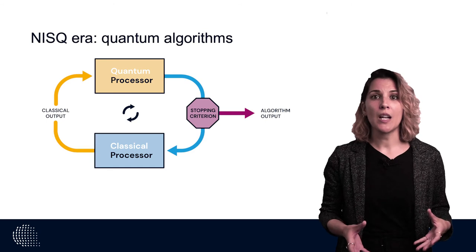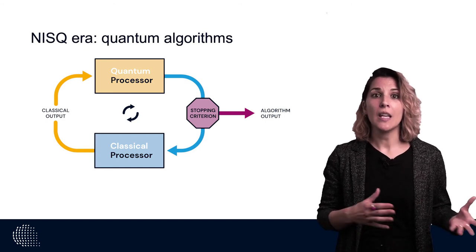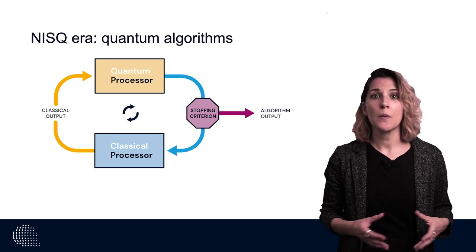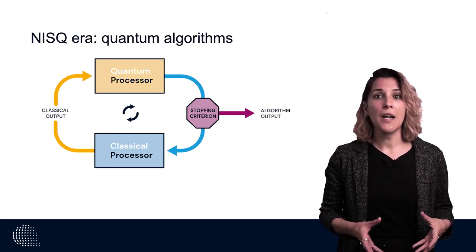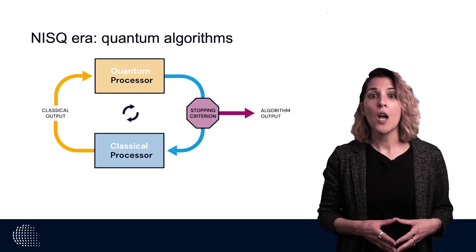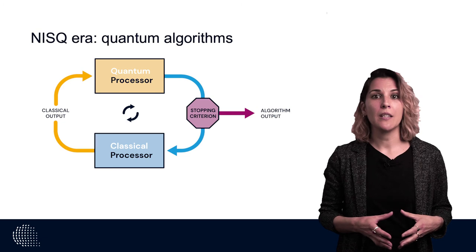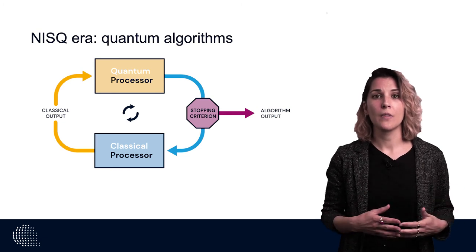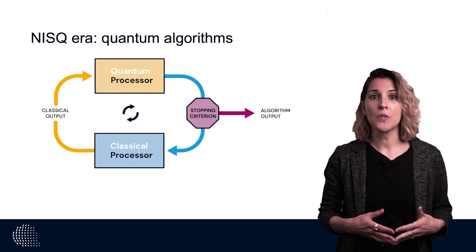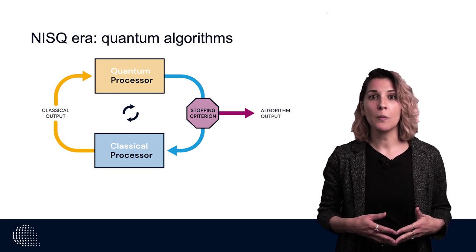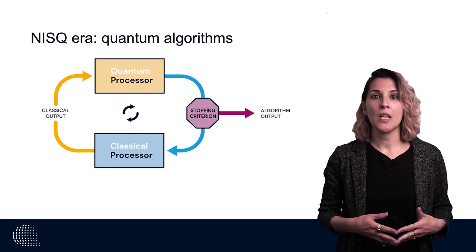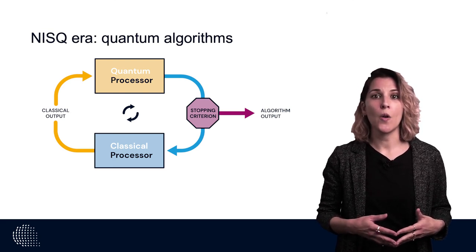Intuitively, because a large portion of the computation is executed on the classical solver, deep quantum circuits might not be required. This kind of algorithms usually use parametrized quantum circuits whose parameters are updated in each iteration. Some popular hybrid quantum classical algorithms are the quantum variational eigensolver, or VQE, and the quantum approximate optimization algorithm, or QAOA.